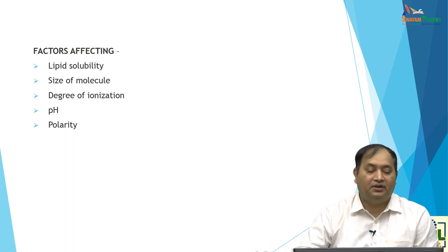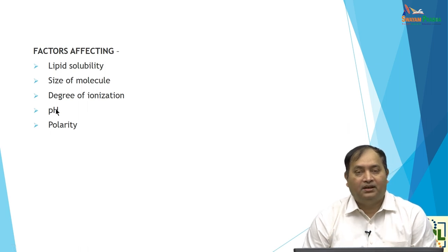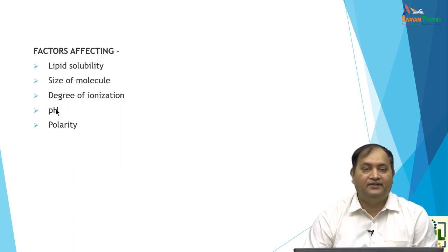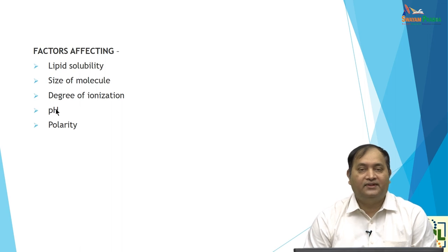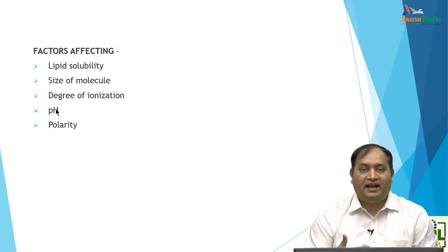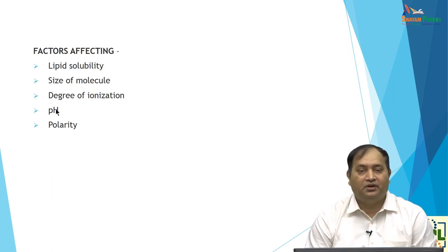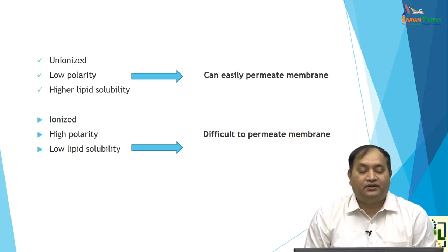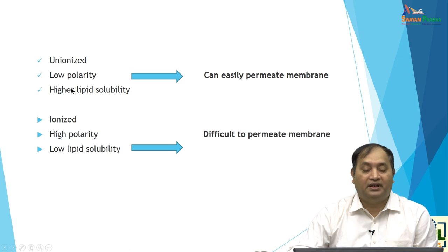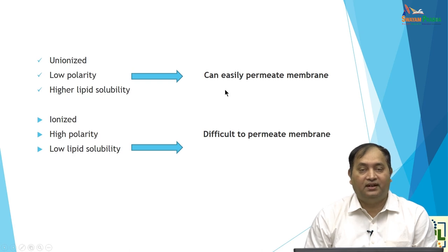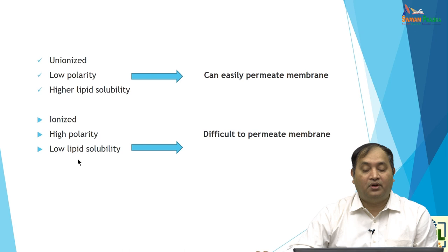pH is a very important factor. In the stomach, hydrochloric acid is released with a pH around 0.8, while gastric juice overall is around pH 1.4. An acidic drug will be more absorbed in the acidic environment. In the intestine there is an alkaline environment, so the drug becomes more ionized. For example, aspirin will be more absorbed in the stomach because of the low pH. Polarity is also important and will be described in detail.